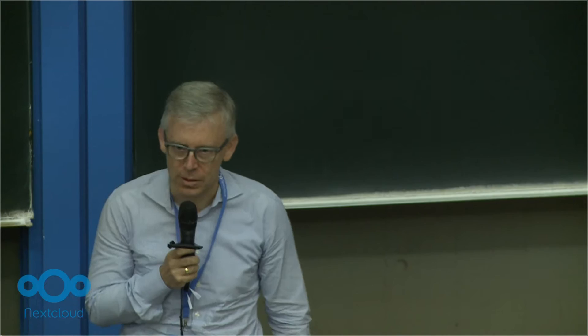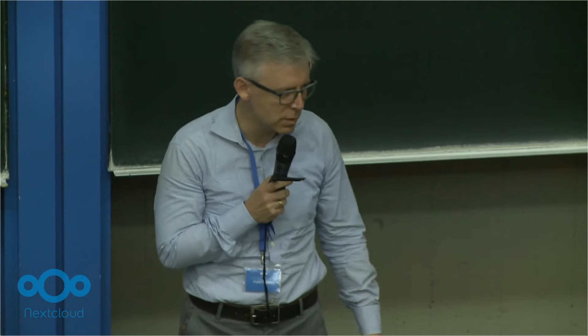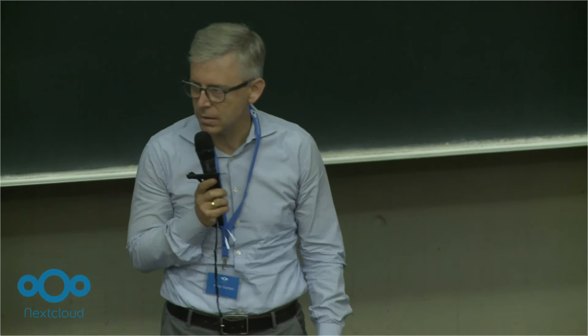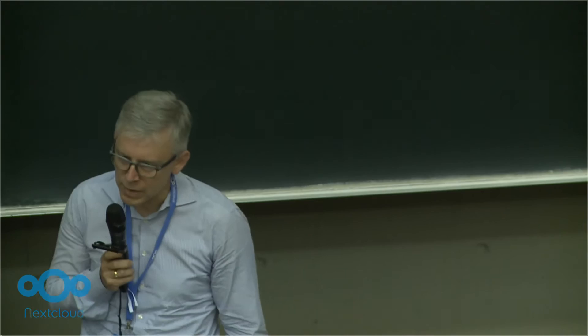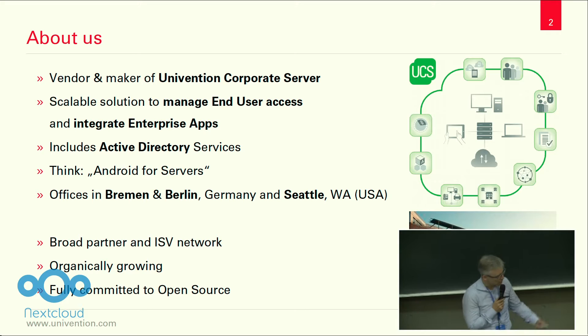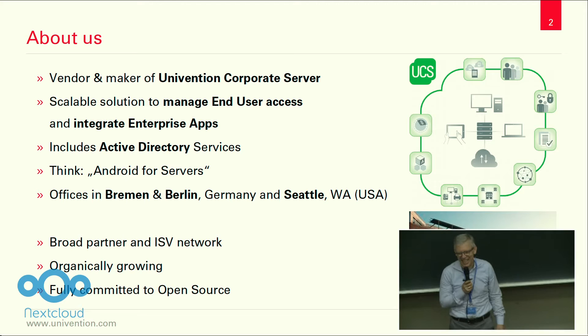Let me give you a short introduction to Univention. We are building open source software for organizations to make the access to the applications their members, their users, and also the services need to use as easy as possible. That basically involves two or three things. The first thing is an identity management system for users, their roles, their access rights. The second thing is an app store-like environment - we call it the Univention App Center - for easy testing, provisioning, deployment, and lifecycle management of enterprise applications, be they in the cloud or on premises on your servers. We also use container technology there a lot.